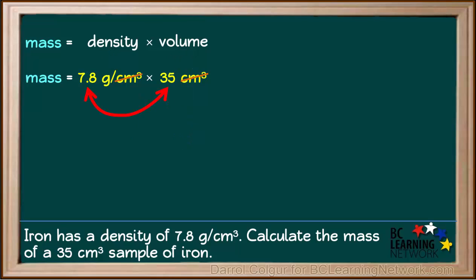Multiplying 7.8 grams per cubic centimeter by 35 cubic centimeters and cancelling out the cubic centimeters gives us a mass of 273 grams.